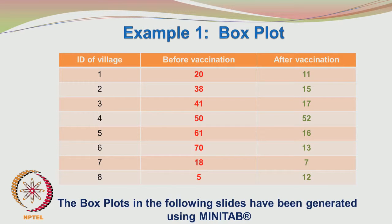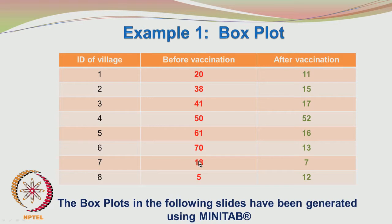You have the ID number of the village, 1 to 8, and then the incidence of the disease before vaccination. The disease could be polio — fortunately it is more or less eradicated. Before vaccination, the incidence was 20, 38, 41, 50, 61, 70, 18, and 5 in different villages. Different villages have different levels of hospital facilities or hygiene, so the numbers vary from one village to another.